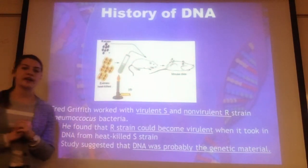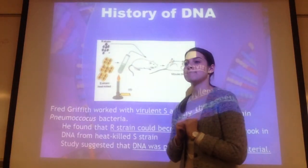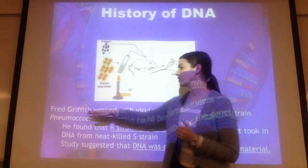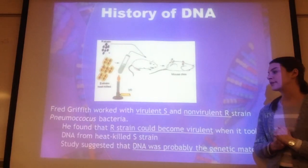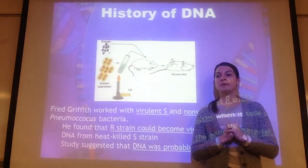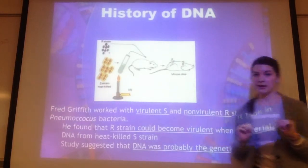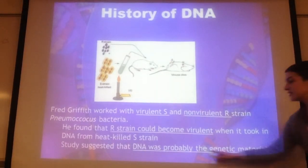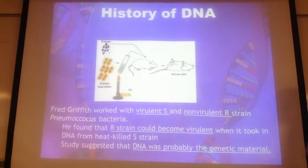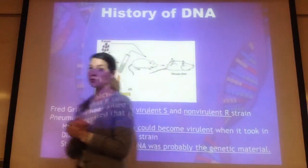Before we get to the actual structure, let's go over a little bit about the history of DNA and who are the key players. First, we have Frederick Griffith. He was working with different types of bacteria and was able to figure out through his experiments that DNA is probably the genetic material that controls us.